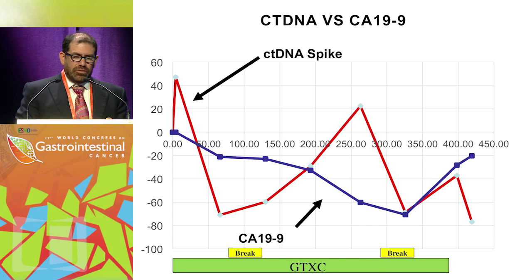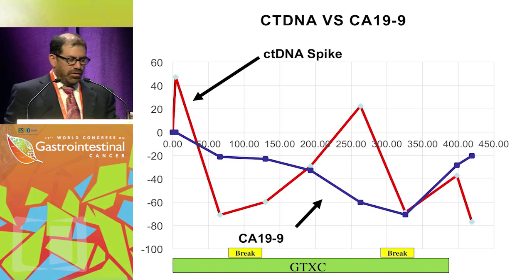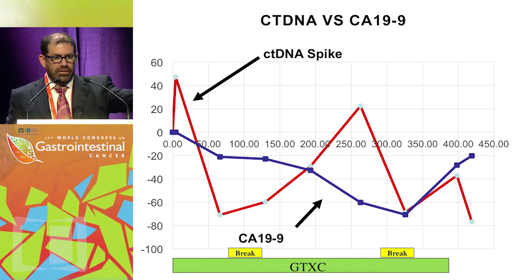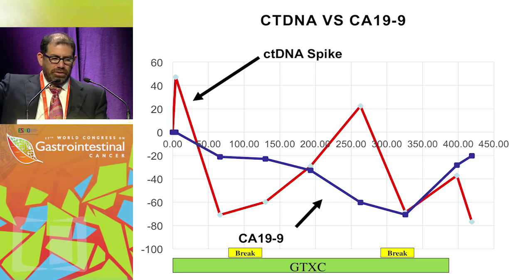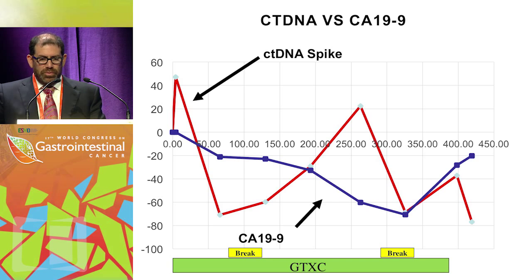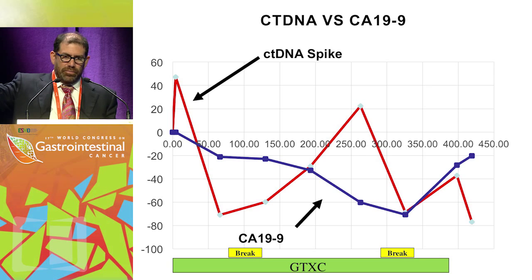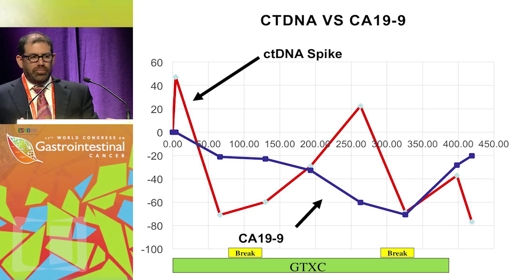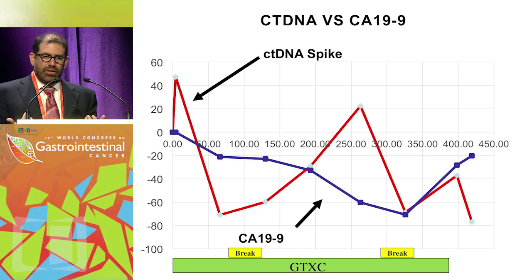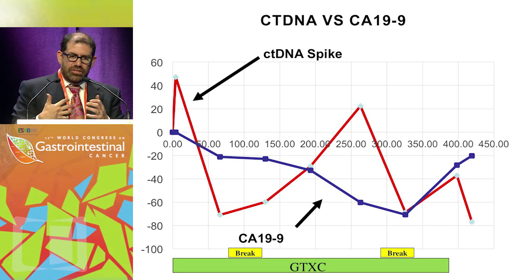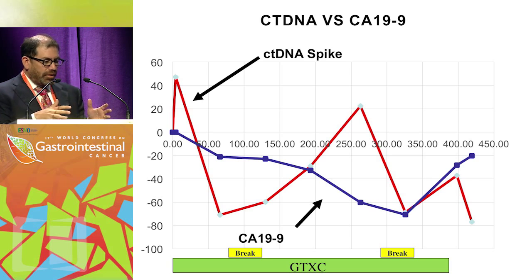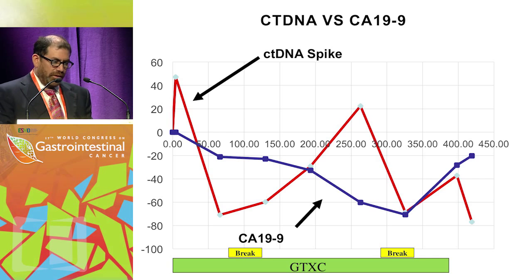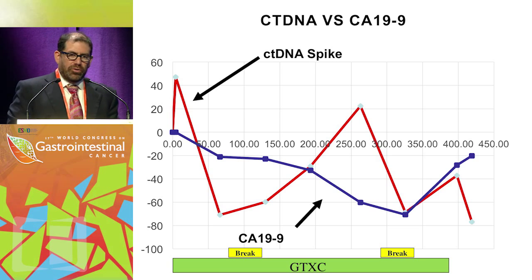Comparing ctDNA to CA-19-9, we saw an initial spike and then a decrease in ctDNA. During chemotherapy breaks, ctDNA increased; when therapy was re-initiated, it decreased; and when the patient became resistant, it increased again. CA-19-9, the protein biomarker, did not show these dynamic changes. So circulating tumor DNA allows us to see dynamic changes in the tumor over time in a way that CA-19-9 does not, potentially allowing better patient monitoring.